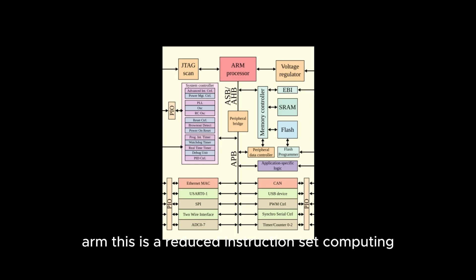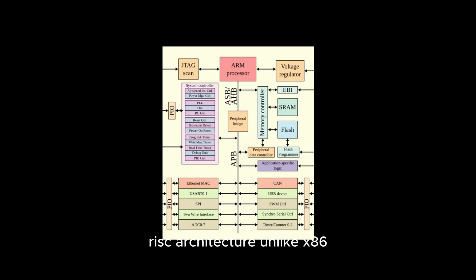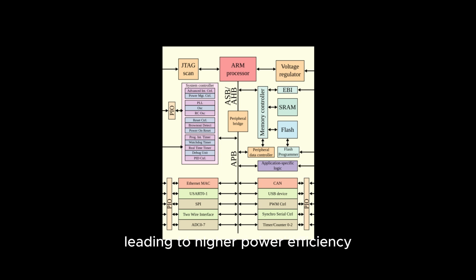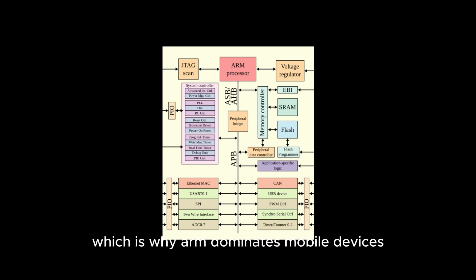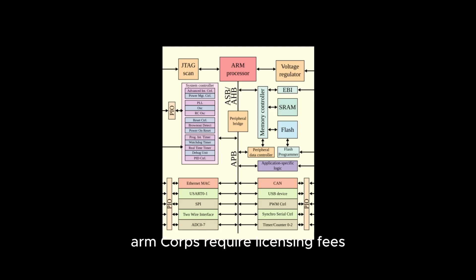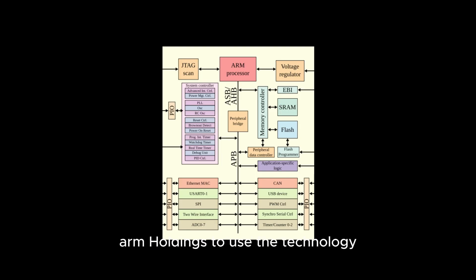ARM is a Reduced Instruction Set Computing, or RISC, architecture. Unlike x86, it uses a smaller set of simple instructions, leading to higher power efficiency, which is why ARM dominates mobile devices and embedded systems. However, ARM cores require licensing fees, meaning manufacturers must pay ARM Holdings to use the technology.